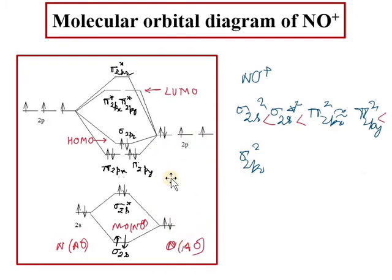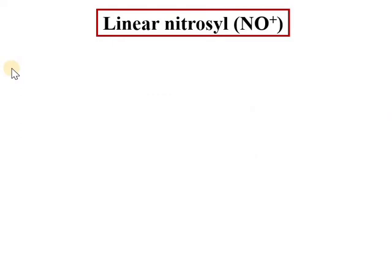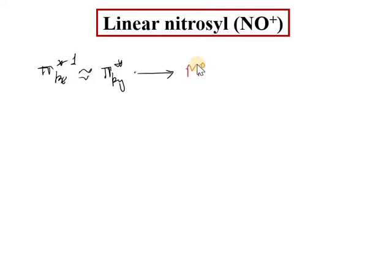So how does linear nitrosyl formation occur? You can see that the anti-bonding orbital had one electron — in the pi* orbital (px), with energy equal to py. If this one electron is lost — where does it go? There is a metal center which had an oxidation state of zero in the complex. If this electron is donated to the metal, then this metal will convert into M minus.